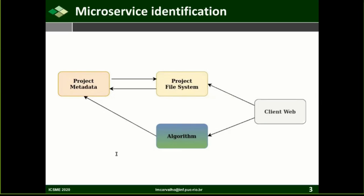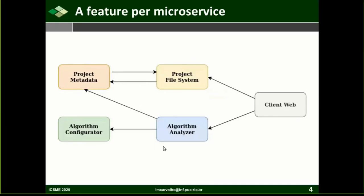In this context, the use of adequate criteria is crucial during the analysis of microservices, where criteria are information observed in the decision-making process for the identification of microservices. One of the criteria considered relevant in this architecture is that each microservice has a single feature. Thus, the developers in this case can decide to identify Algorithm Configurator and Algorithm Analyzer microservices, producing a grain split within the Algorithm microservice, leading to better modularization of a single feature per microservice.